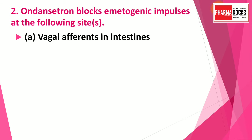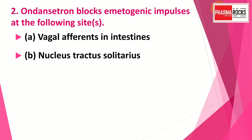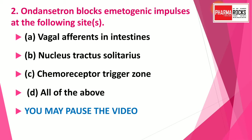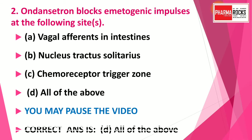Question number two: Ondansetron blocks emitogenic impulses at the following sites — option A: vagal afferents in intestines; option B: nucleus tractus solitarius; option C: chemoreceptor trigger zone; option D: all of the above. The correct answer is option D — all of the above. Ondansetron blocks vagal efferents in the intestine, the nucleus tractus solitarius, and the chemoreceptor trigger zone.